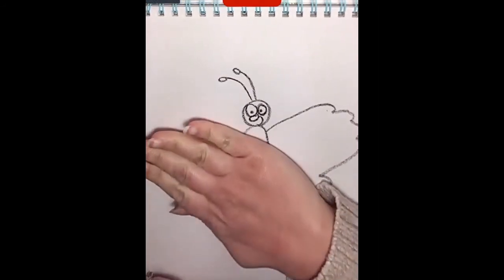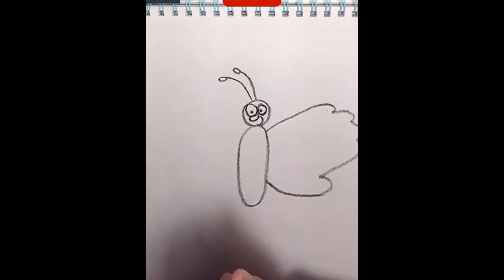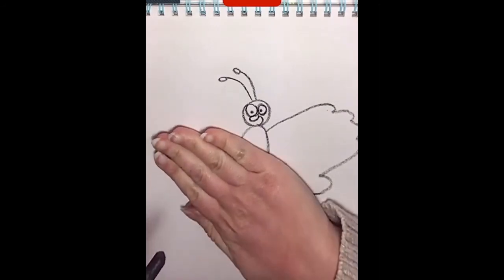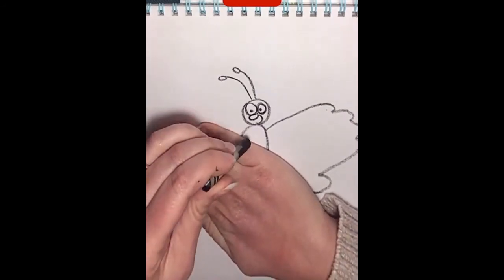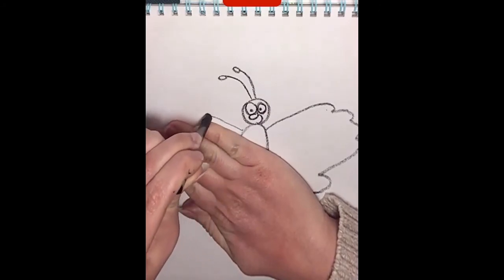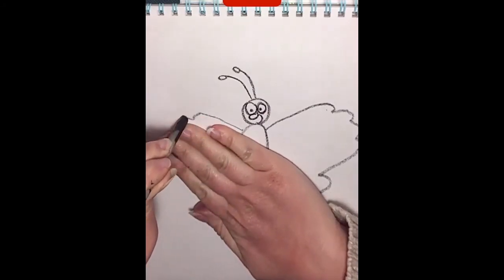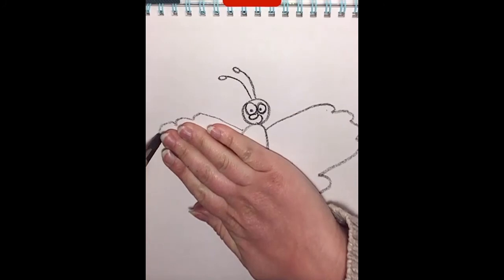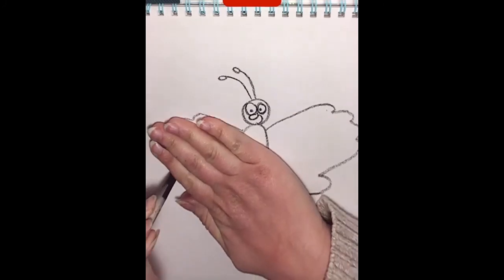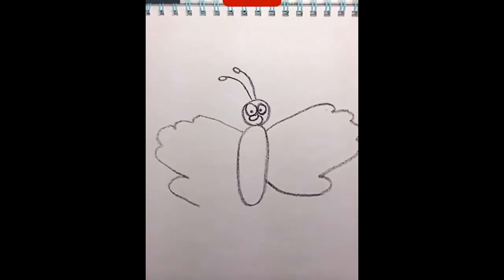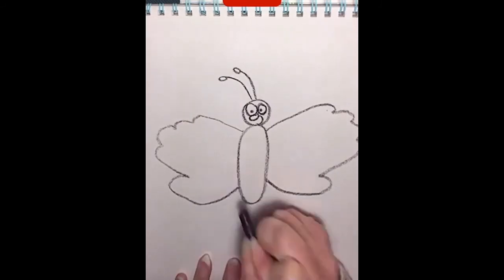And then I'm going to do the same thing on the other side with this hand. Now if you have trouble tracing your opposite hand, you can have somebody help you. But I think I might be able to do it without any help. So I'm just going to go ahead and trace my hand like this. And then I'm going to move my hand and bring my wing around.